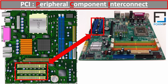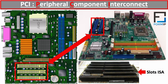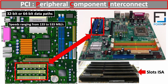The PCI slots are much faster than their predecessor, which were the older ISA slots. The PCI ports have a 32-bit or 64-bit data path and provide speeds ranging from 133 to 533 megabytes per second. Their width is about half that of an ISA port.